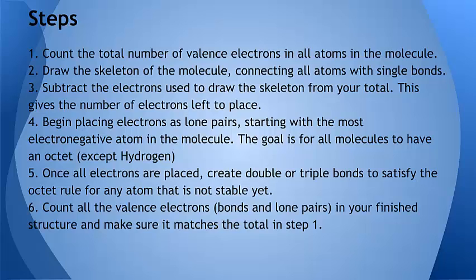You're going to put the electrons in as lone pairs, starting with the most electronegative atom in the molecule. The goal is for all molecules to have their octet, their eight valence electrons, except hydrogen, which only needs two. Once they're all placed, if there are still some atoms that don't have an octet, you can make double or triple bonds to satisfy that. Finally, count all the valence electrons, bonds and lone pairs, and make sure you have the same number in your structure as you did in step one.